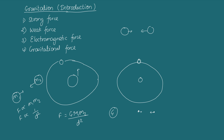G does not depend on the chemical composition of the masses. Whether the mass is made of iron, copper, or any other material, the value of G remains unchanged.